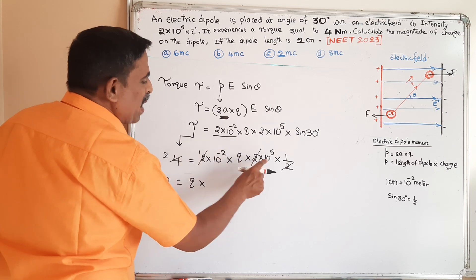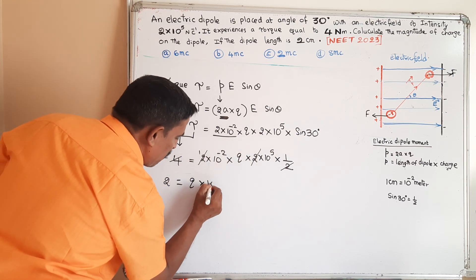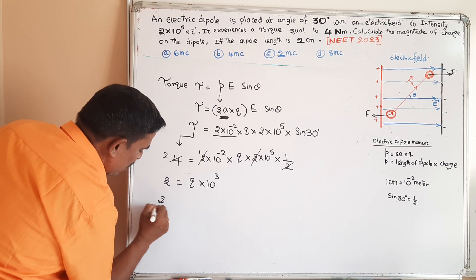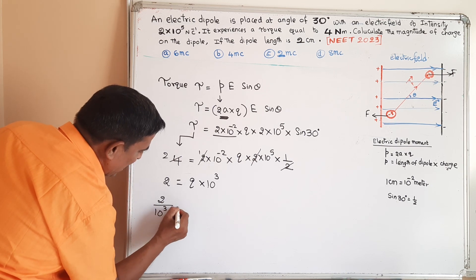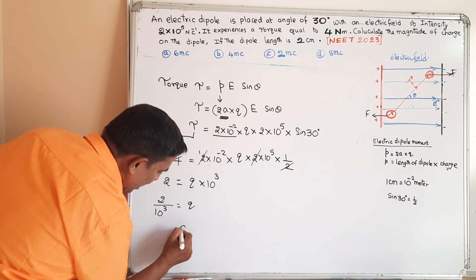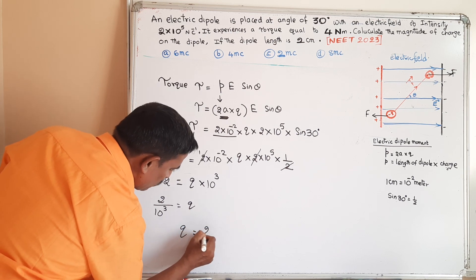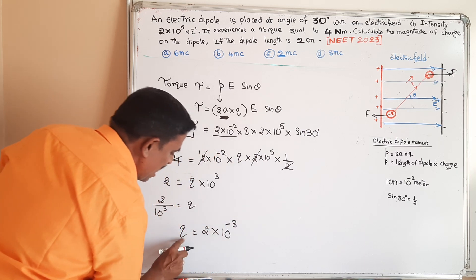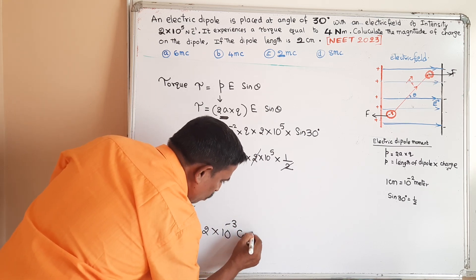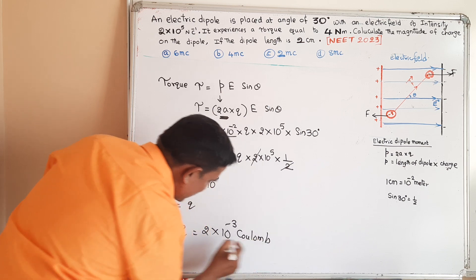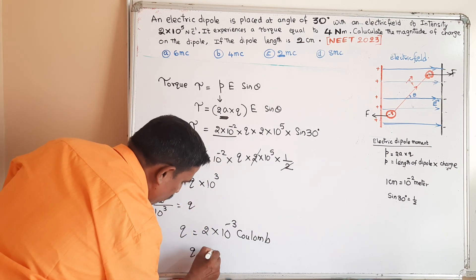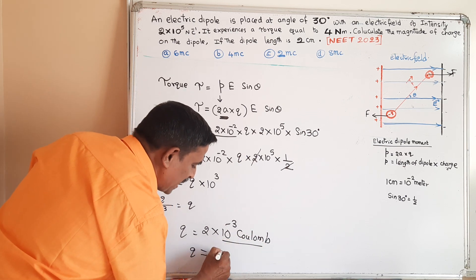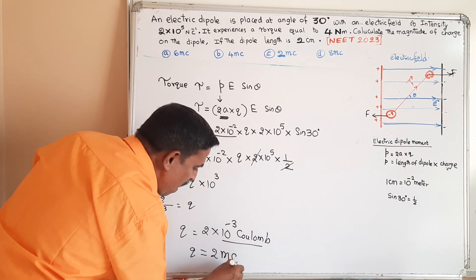After cancellation: 10⁵ and 10⁻² combine to give 10³. So 10³ comes to the denominator: 2/10³ = Q, therefore Q = 2×10⁻³ coulomb, which means 2 millicoloumbs.